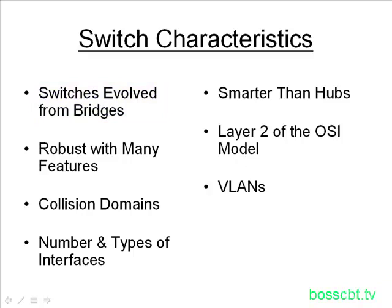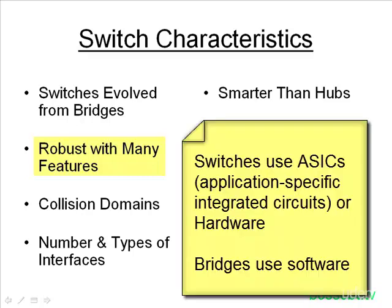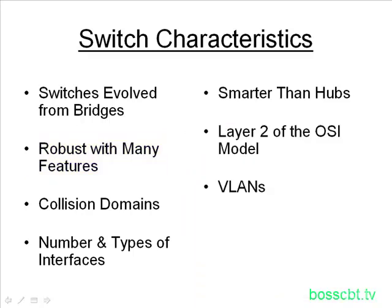Switches are much more robust and have a lot more features than the other devices, especially bridges. A switch performs a lot of its functionality in hardware, which is a lot more efficient than how bridges do it — bridges actually rely on software. For software to run and forward a frame and figure out how to do it, it's a lot slower and less efficient than when it's done in hardware on a switch.